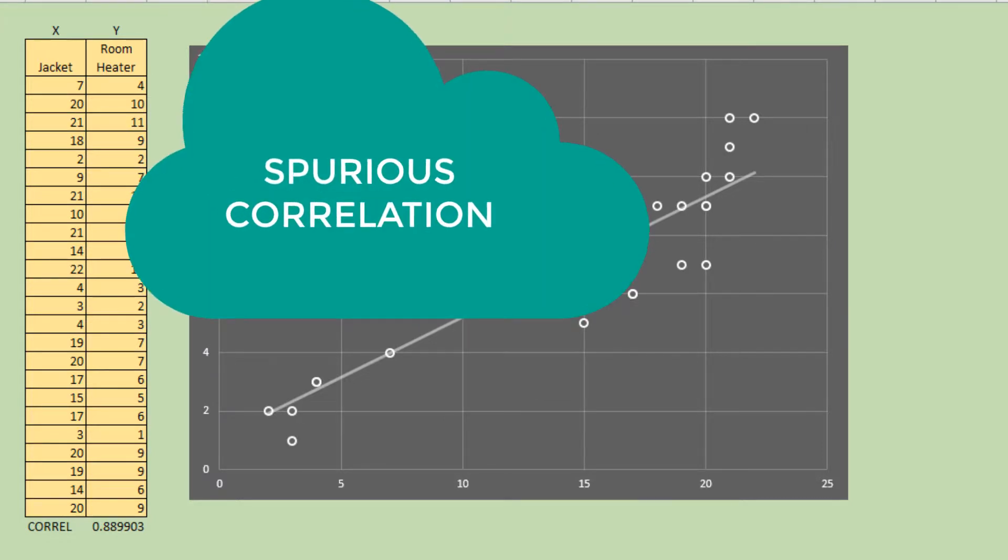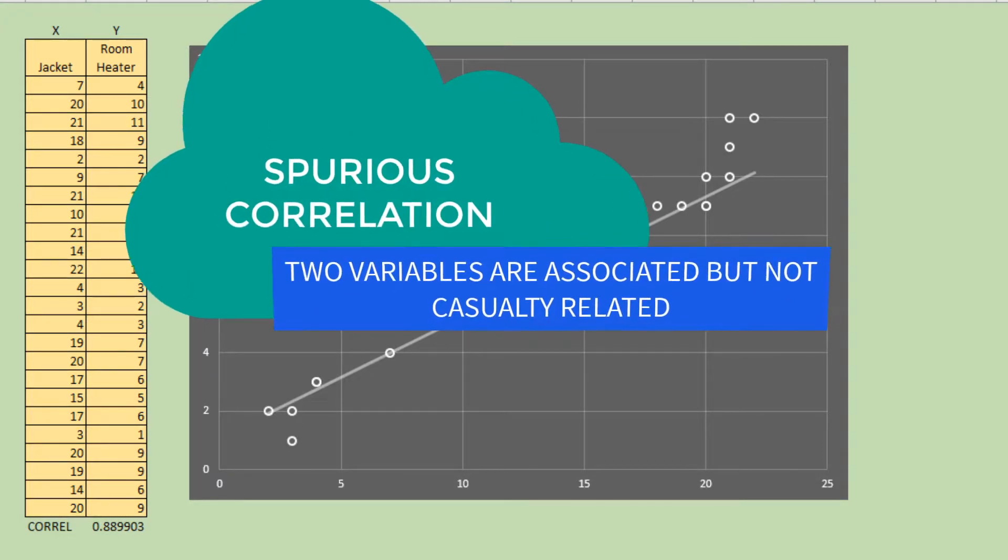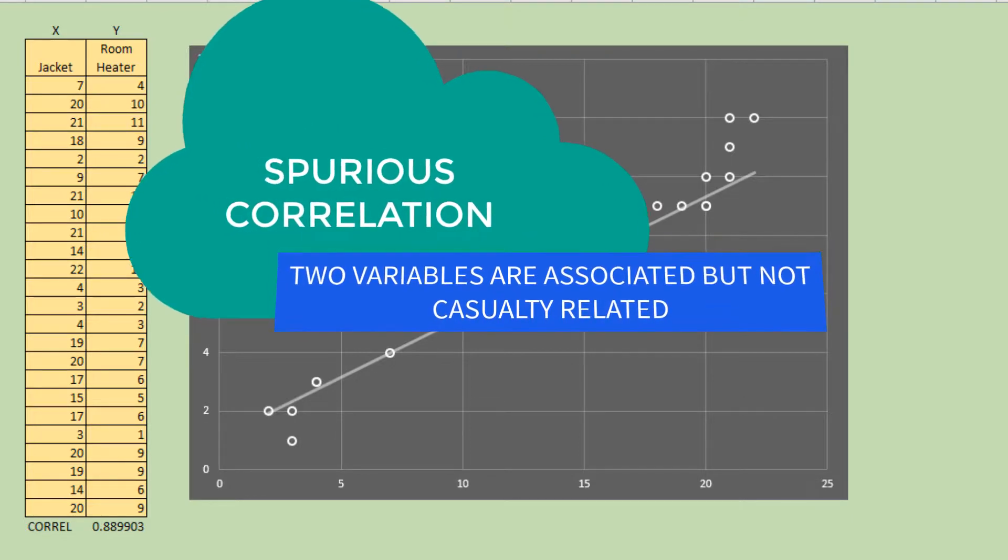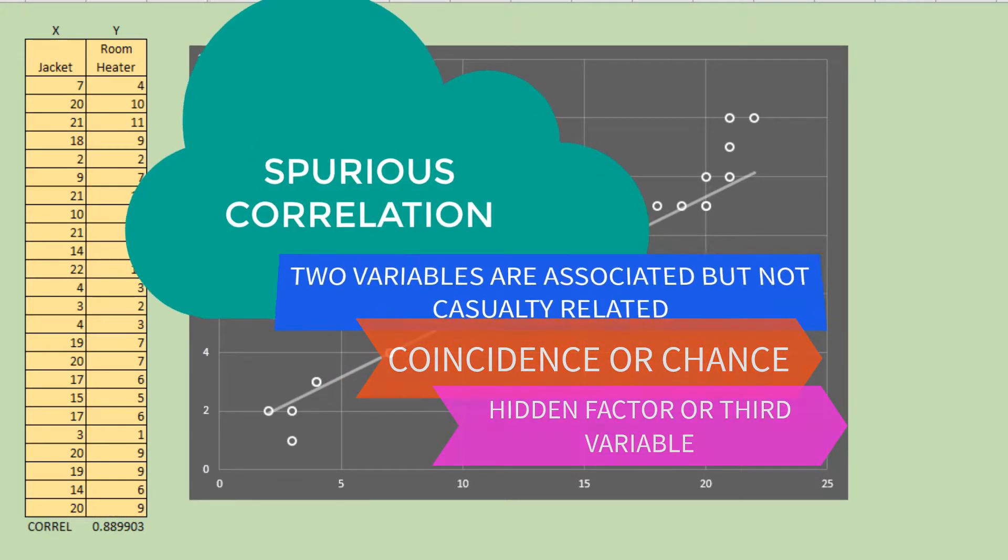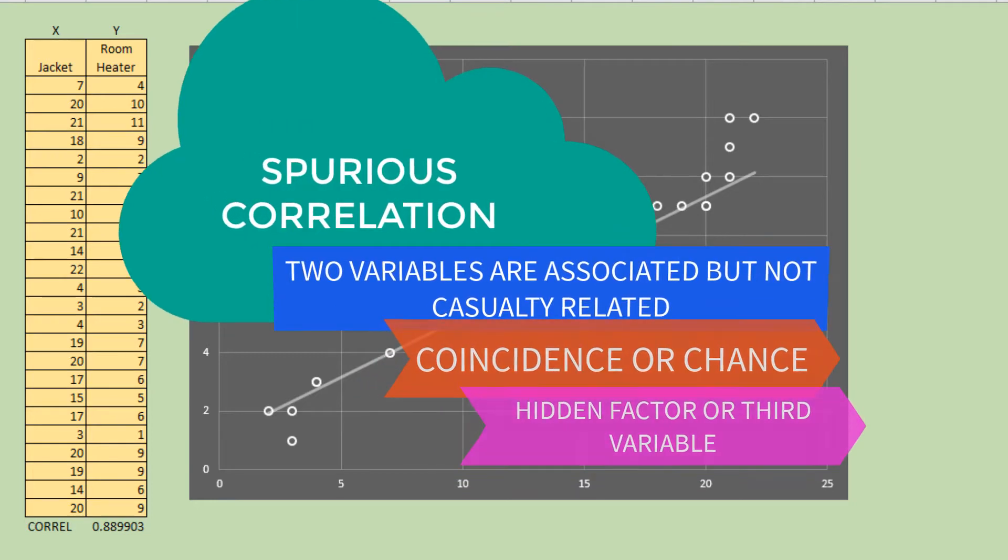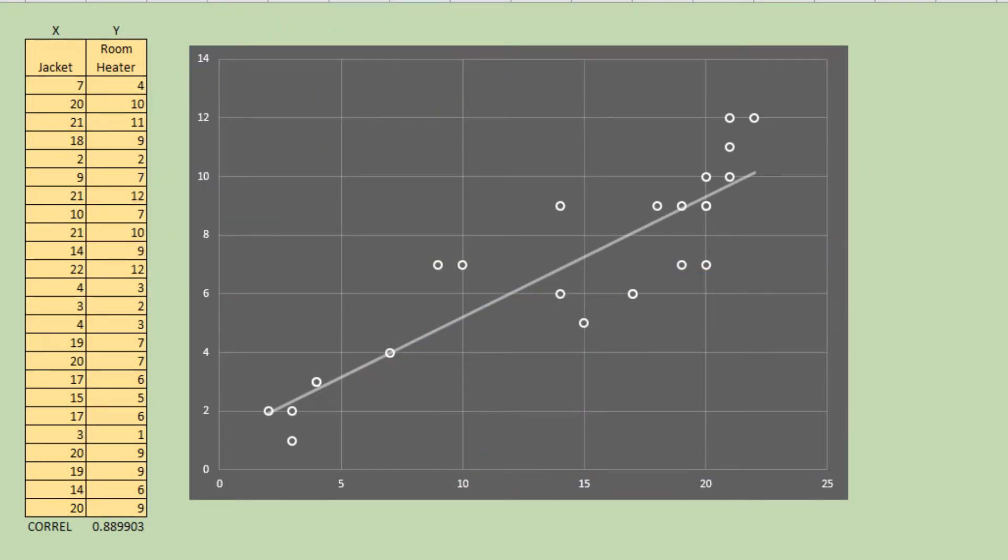Spurious correlation is a relationship in which two or more events or variables are associated but not causally related due to either coincidence or chance or the presence of a certain hidden factor or third variable that affects the first two variables.